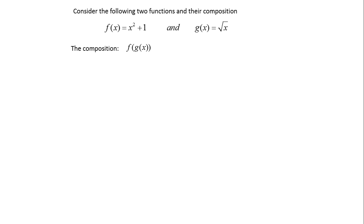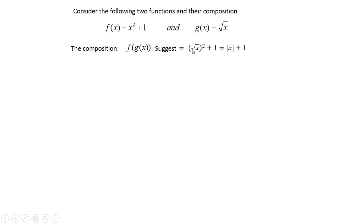What is the composition f of g of x? That would suggest that g of x, the square root of x, is being placed in as x. Doing that results in the absolute value of x plus 1. You might ask, why is it the absolute value? I thought the square root of x squared is just x. Well, if you remember, we did define that the square root of x squared is the absolute value of x, and you can actually confirm that with your calculator. So it is the absolute value of x plus 1.